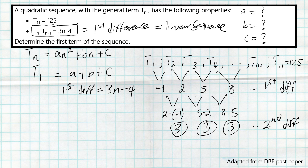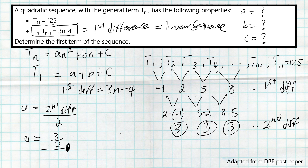Now we have the first and second differences. To get the value of a: a equals the second difference divided by 2. Our second difference is 3, so a = 3/2.